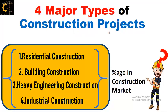Construction projects can be divided into many types, but four major types are: first, residential construction; second, building construction; third, heavy engineering construction; and fourth, industrial construction. We will also discuss the percentage each type accounts for in the construction market.